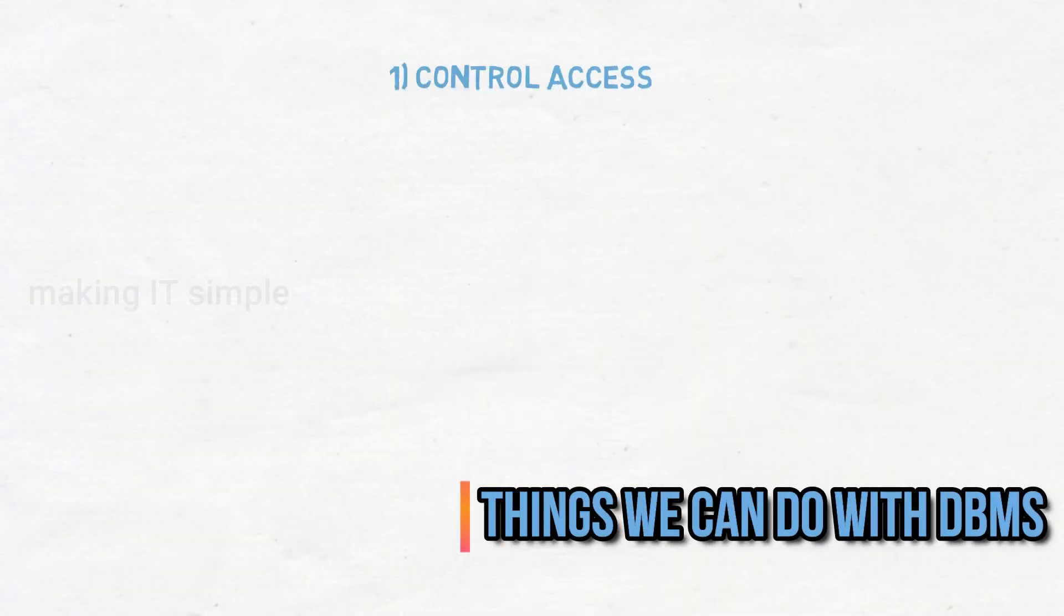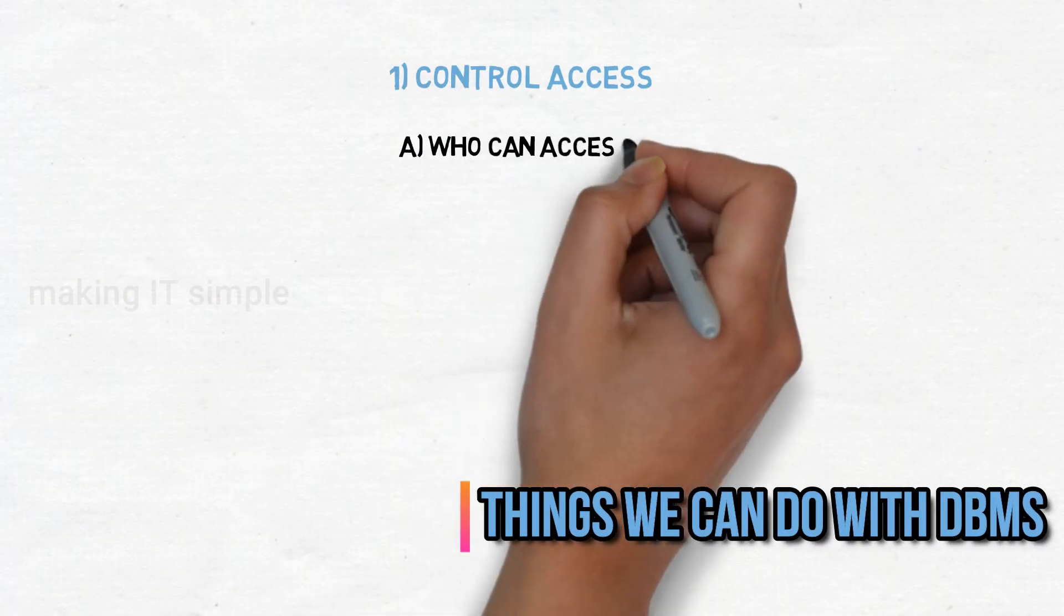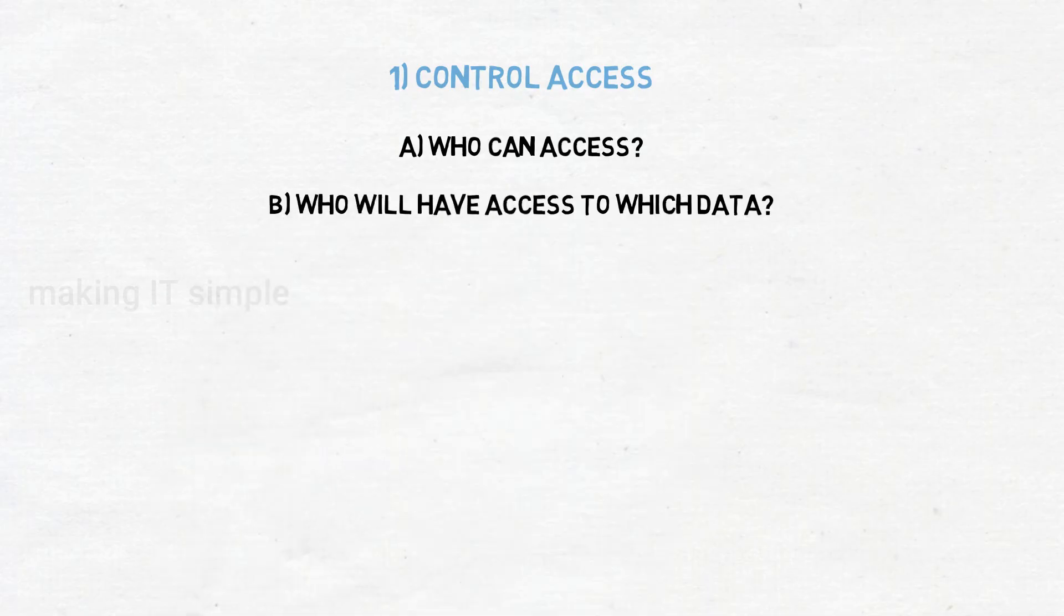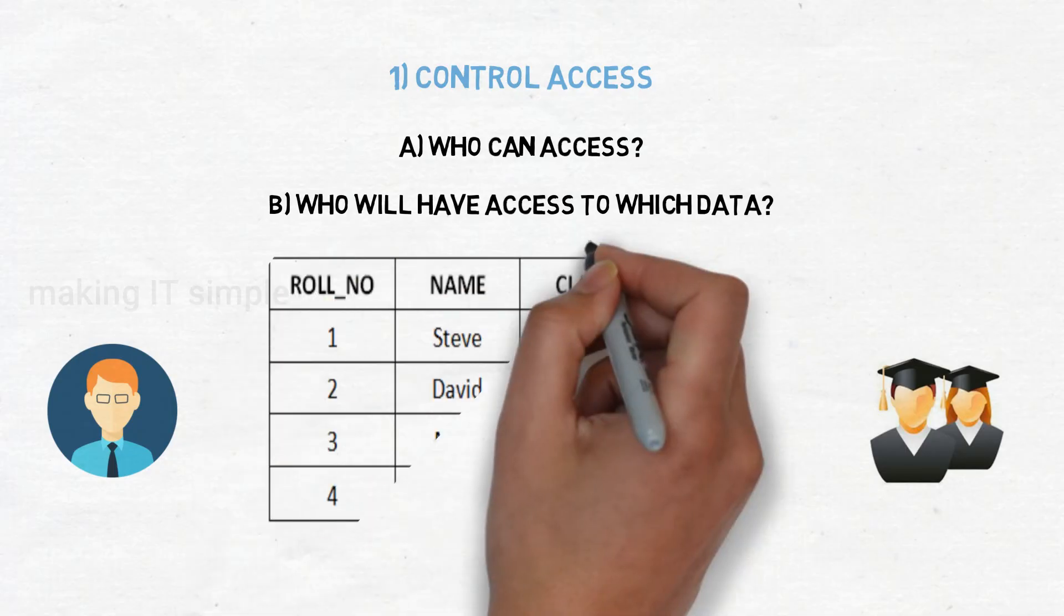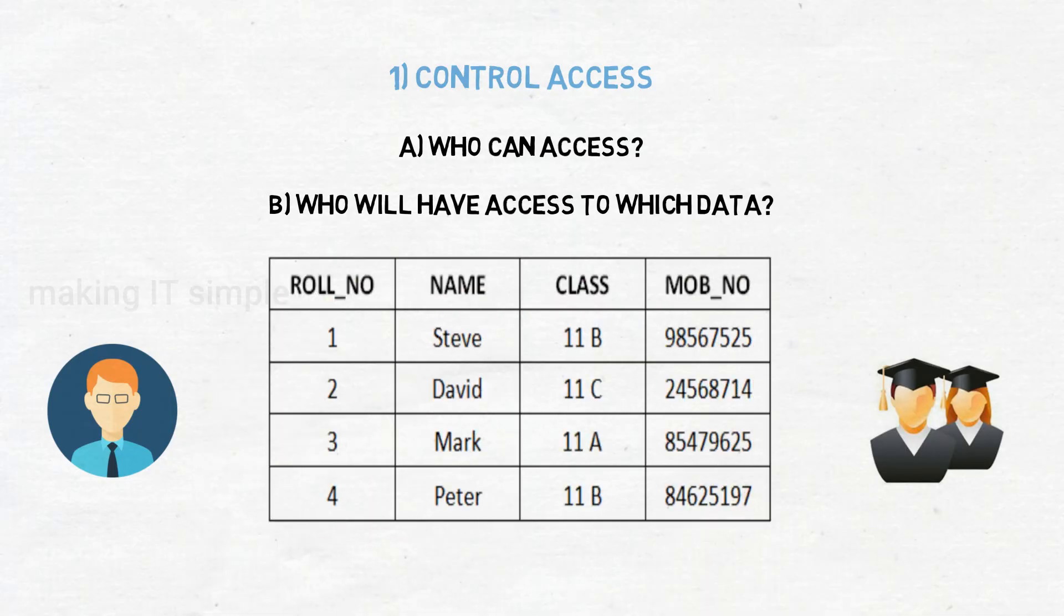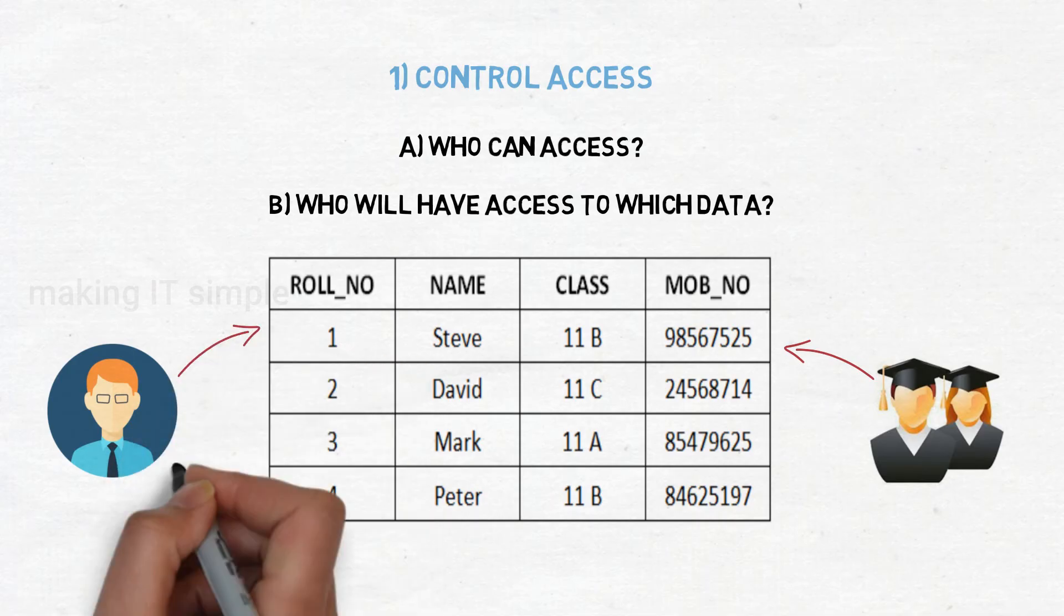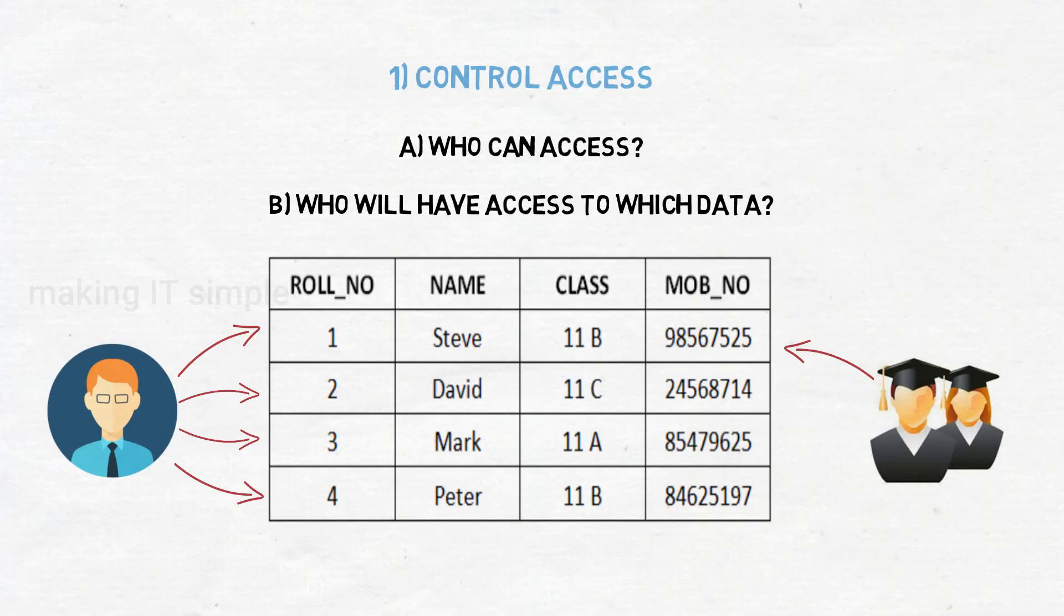Control access. With DBMS we can decide who can access the data and how much of data can someone access. For example if there is a college database, then each student must have access to only his or her own data. On the other hand teacher can have access to all students data. This can be managed through DBMS.